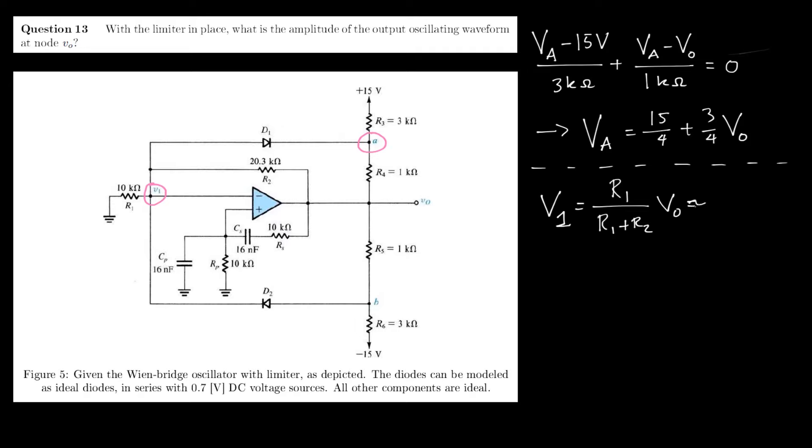And that is approximately, if we fill in values, VO over 3. Because if it were exactly VO over 3, then it wouldn't be 20.3, but 20 kilo ohms. But it's close enough for our purposes.